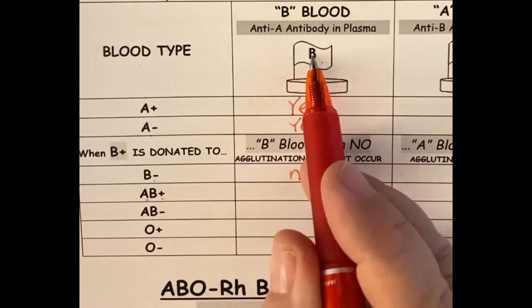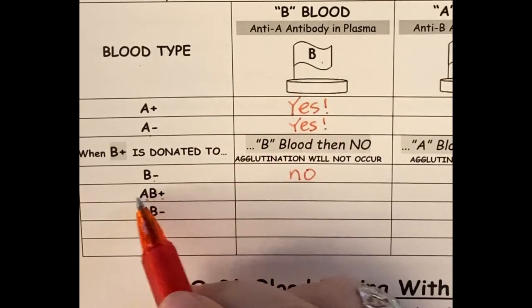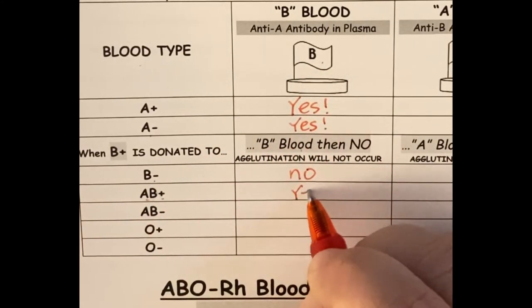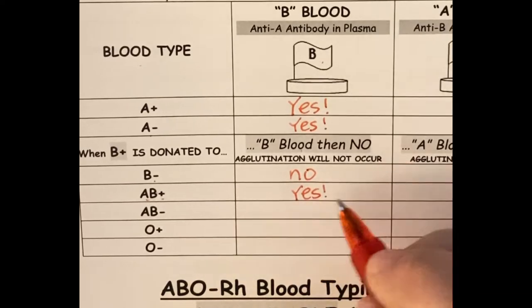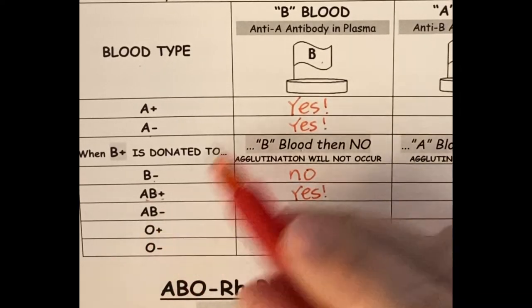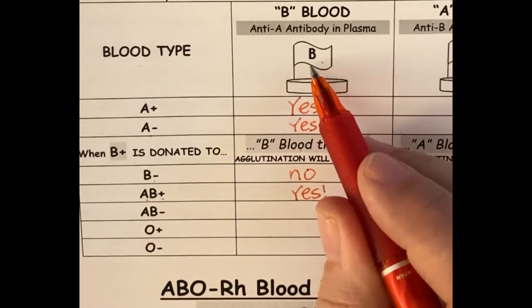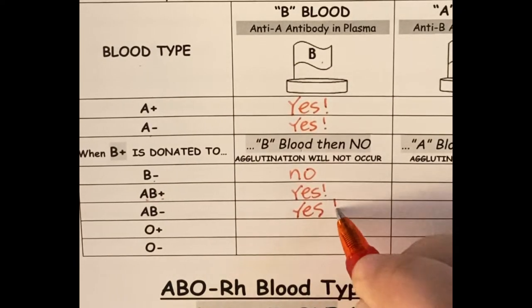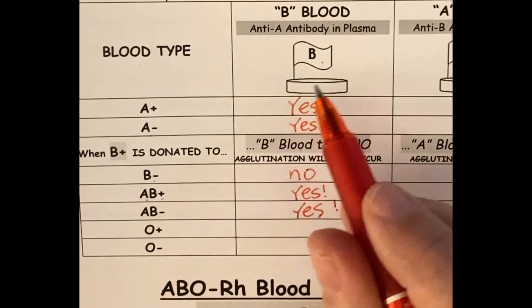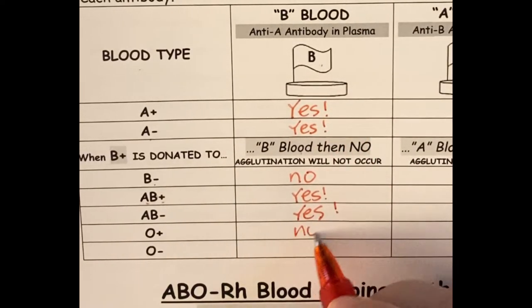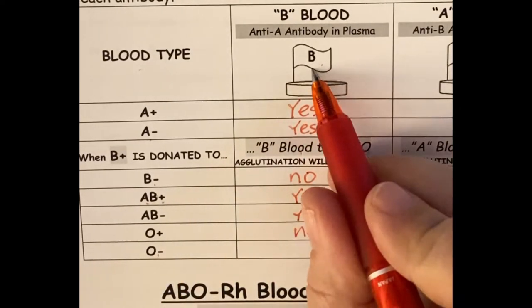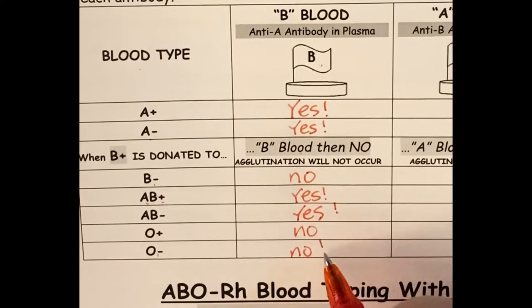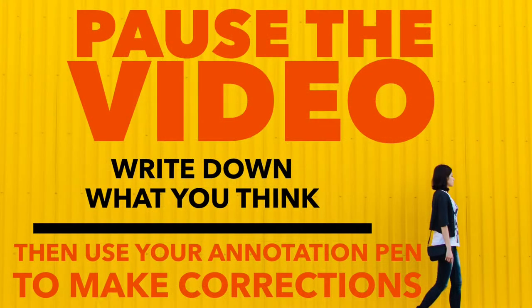AB is a little bit different. The B is recognized, but the A isn't, so there will be agglutination — just not quite as much. Same for the other AB. And O — the ninja — if you put a ninja into B, no agglutination is going to occur because there are no antigens. Now pause the video and try to fill in the rest of the chart.